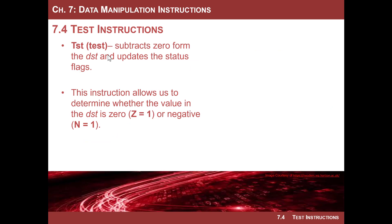The third test instruction is actually called TEST. It subtracts zero from the destination and updates the status flags. The key flags here are negative and zero. If the value in the destination was zero, the Z flag is asserted. If the value was negative, the N flag is asserted. So you can determine if a value is zero or negative. They're simple but powerful, and the key differentiation from logic operations is that you don't alter the destination.